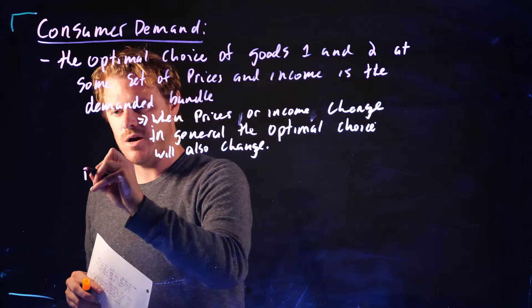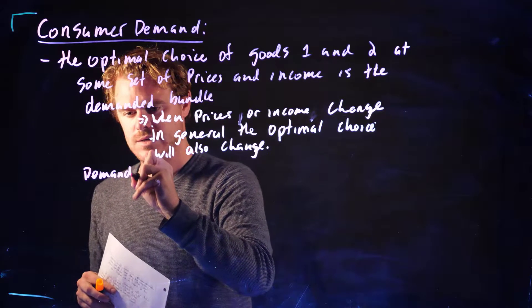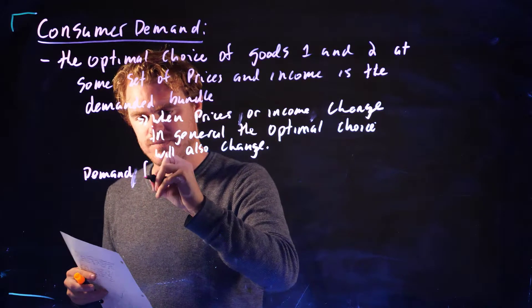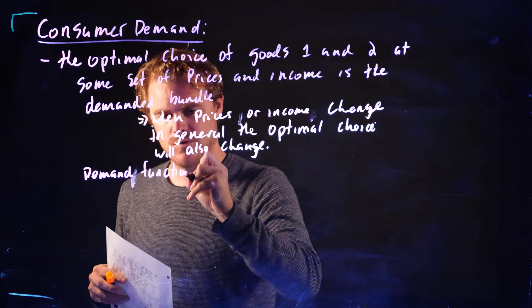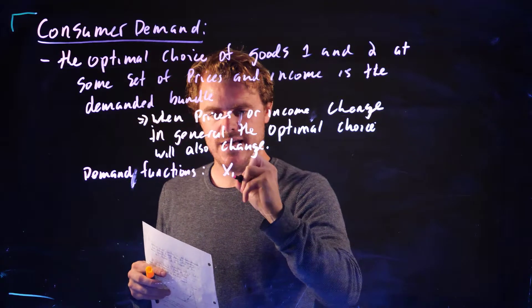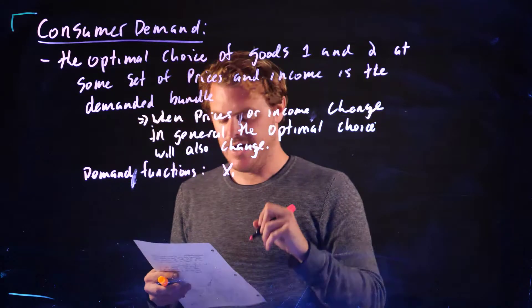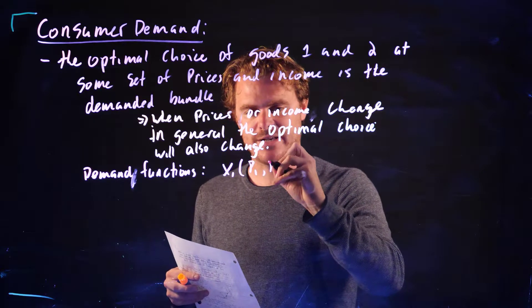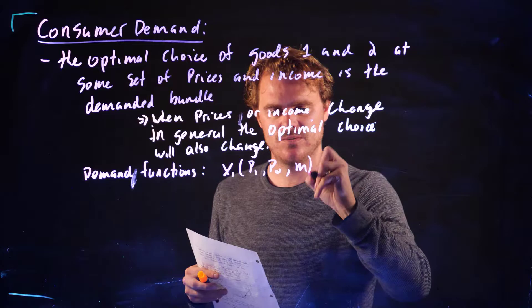So our demand functions for these two goods, the demand for good 1, it's going to be a function of the price of good 1, the price of good 2, and income.